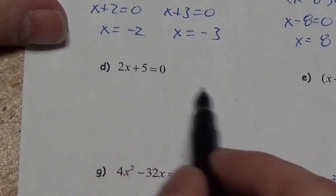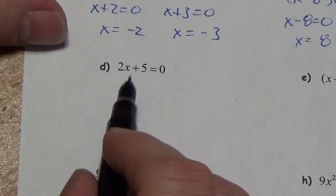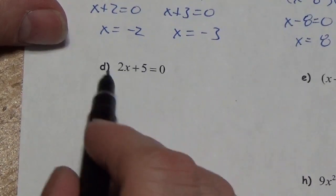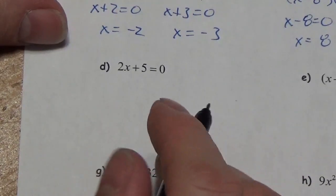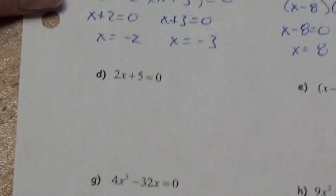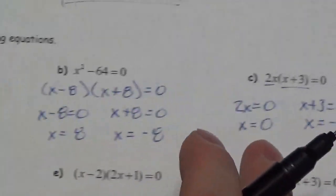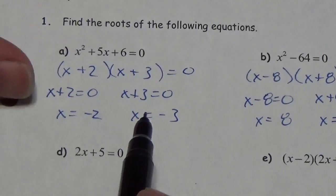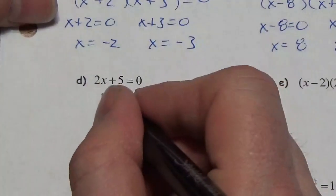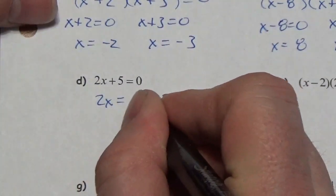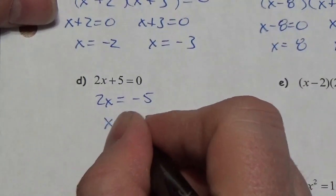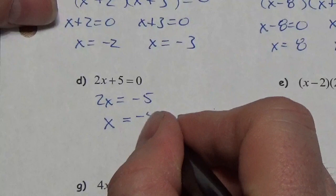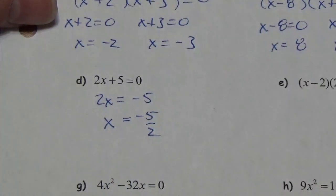For 2x + 5 = 0, notice this is a linear function — I don't need to factor. What I was doing previously was converting a quadratic into linear factors, but here I've just got a linear. So I'll subtract 5 from both sides and divide by 2 to get x = -5/2.